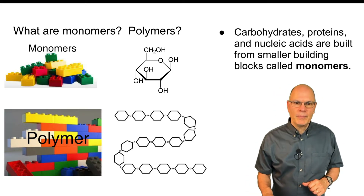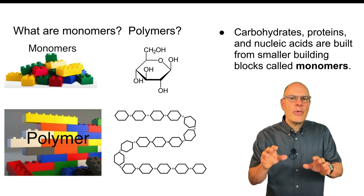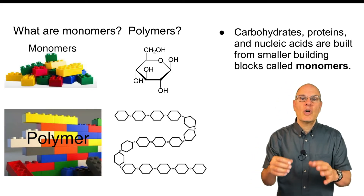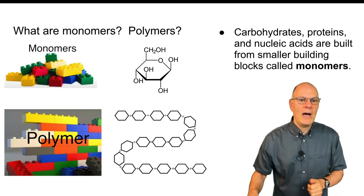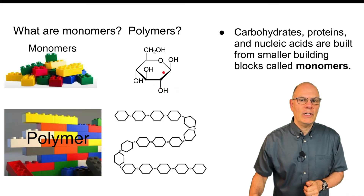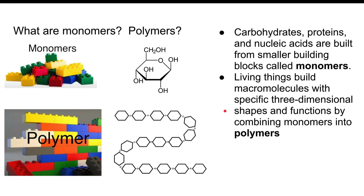So what are monomers? What are polymers? The basic idea is that three of the four groups of biomolecules — carbohydrates, proteins, nucleic acids — are built from smaller building blocks called monomers. Living things build macromolecules — the big molecules: proteins, nucleic acids, polysaccharides — that have specific three-dimensional shapes, and shape determines function, by combining monomers into polymers. A great analogy is that monomers are like Legos — you can combine them in any way to create other structures, and these big structures, like the Millennium Falcon you might have built as a kid, are the polymers.